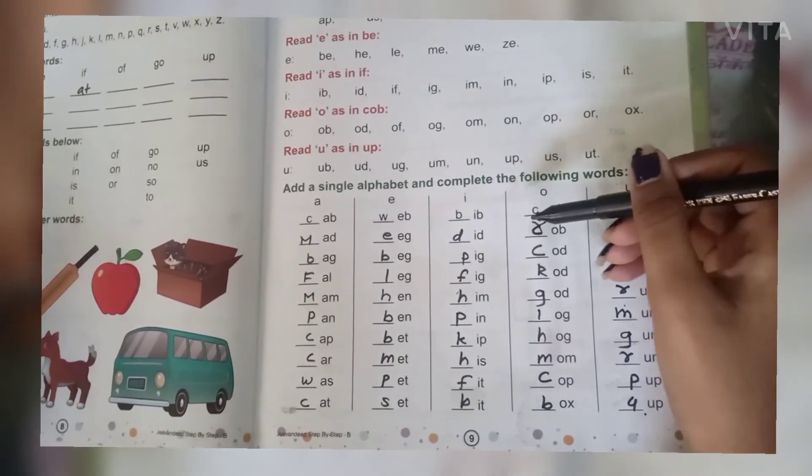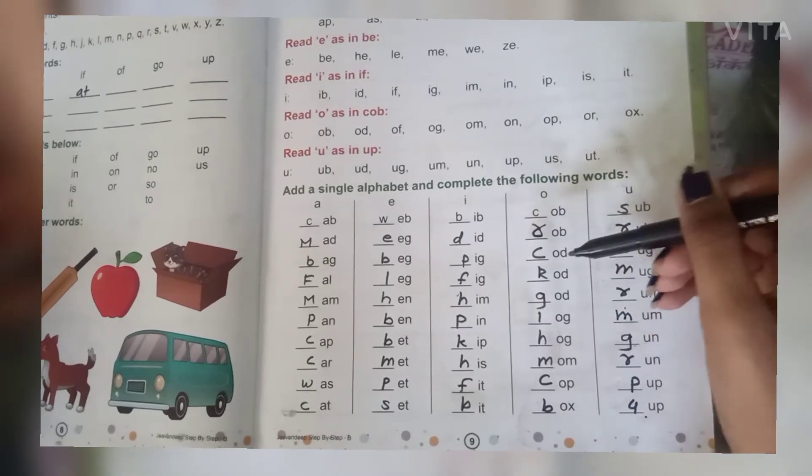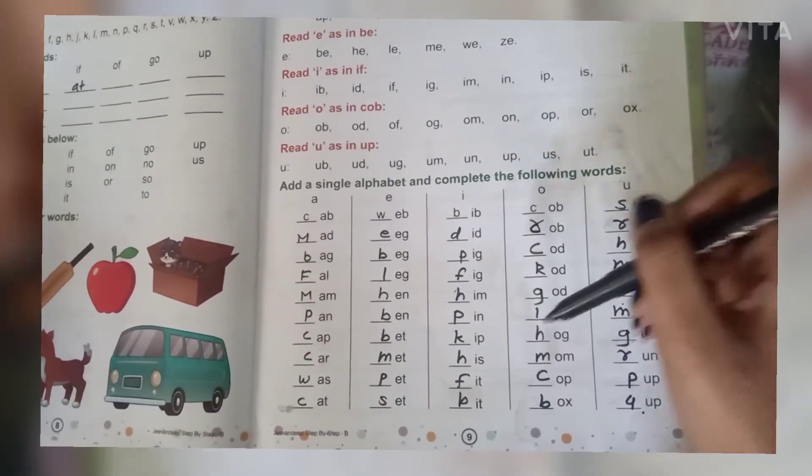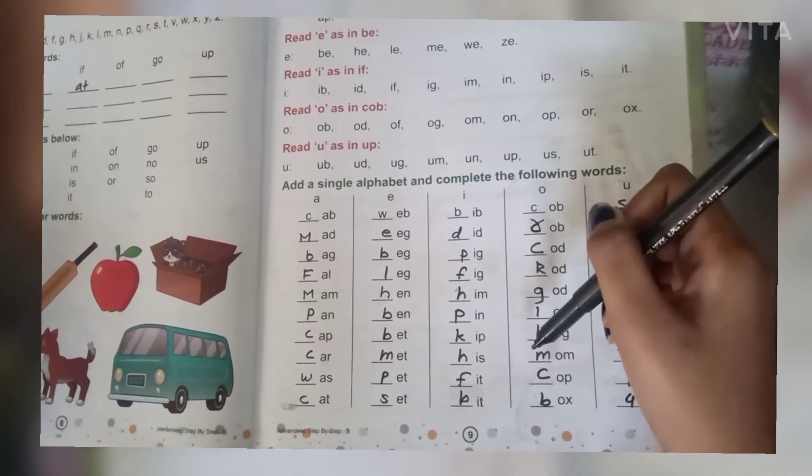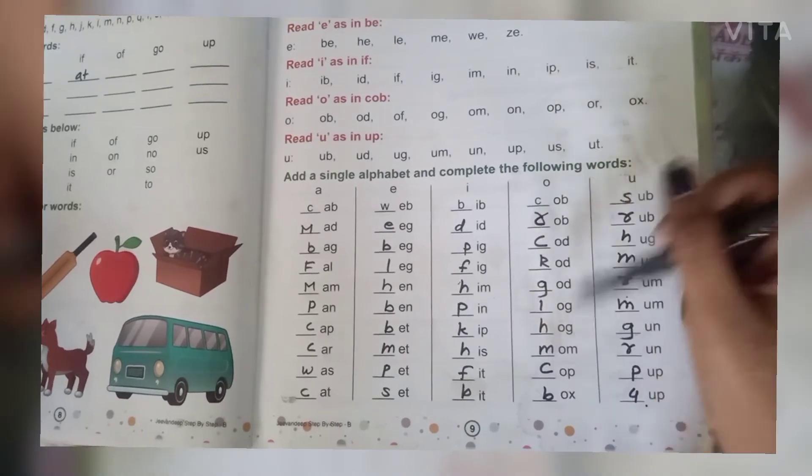C-O-B, cob. R-O-B, rob. C-O-D, cod. R-O-D, rod. G-O-D, god. L-O-G, log. H-O-G, hog. M-O-M, mom. C-O-P, cop. B-O-X, box.